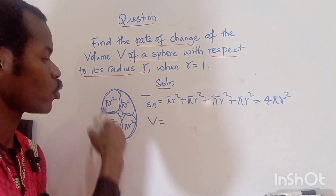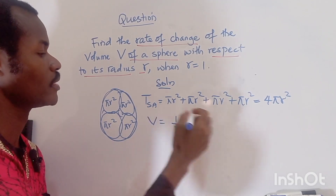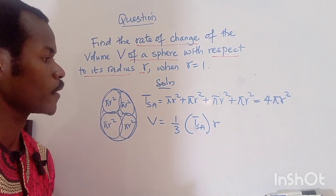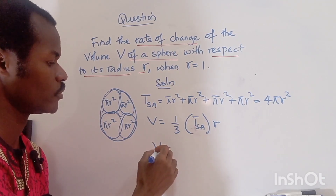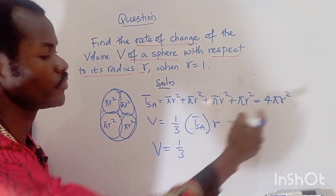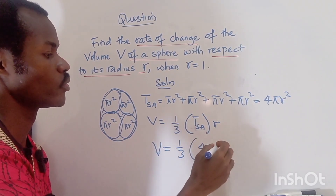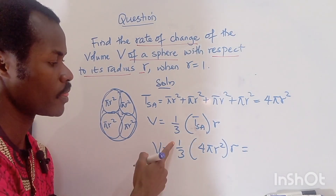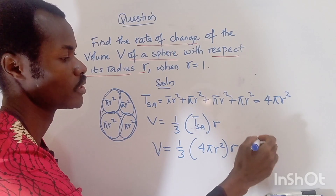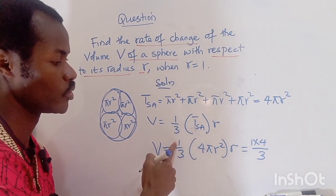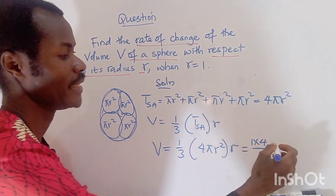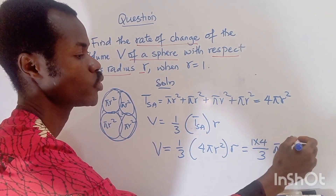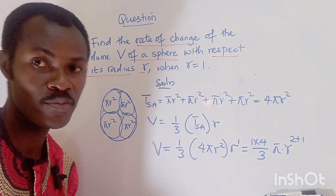For the volume of the sphere, it is one-third of the total surface area multiplied by the radius. So the volume equals one-third times four πr² times r, which gives us one times four divided by three, times π, times r squared times r — that is r raised to the power of three.